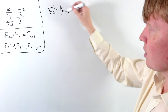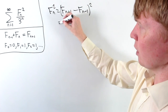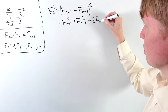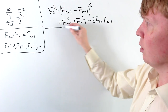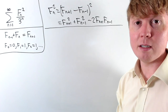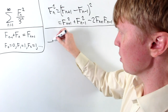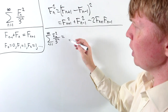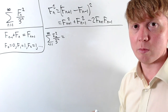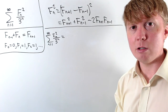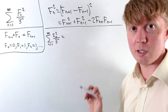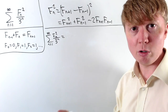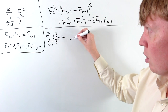This is helpful because it allows us to express fn squared as these two terms squared. When we expand the bracket, we get fn+1 all squared, plus fn-1 all squared, minus two lots of fn+1 times fn-1. We're going to split this into three different separate series. This step does strictly rely on the fact that this series is convergent, which you can show — we won't go into the details here.